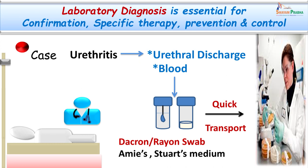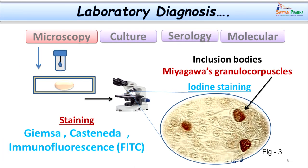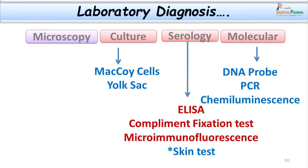The sample was collected and sent to the laboratory. In the laboratory we have various modalities of diagnosis. There was no evidence of any organisms or bacteria on initial examination. However, inclusion bodies stained brown in colour due to the presence of glycogen can be seen. Other staining methods that can be considered are the Giemsa stain, Castaneda stain, and immunofluorescence staining. Other modes of diagnosis available are culture, serology, and molecular techniques.